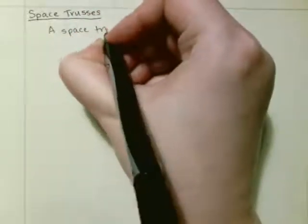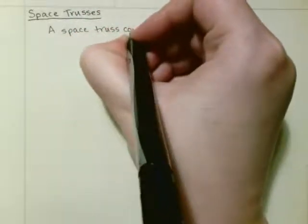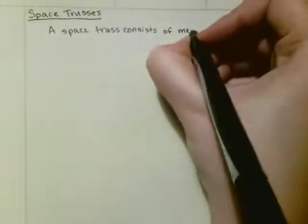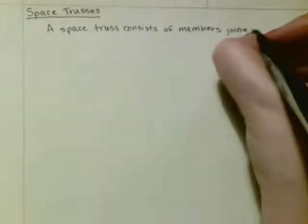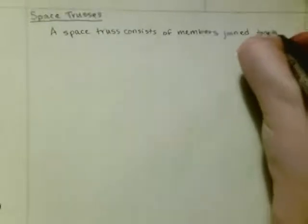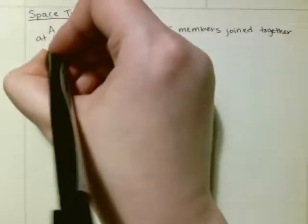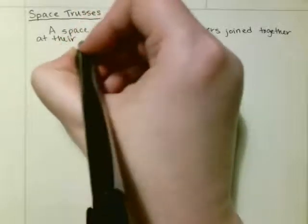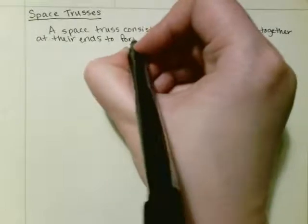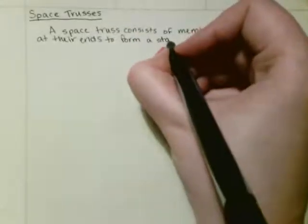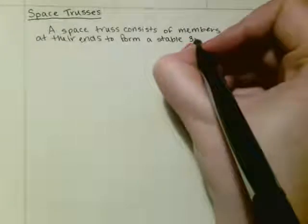Okay, this is space trusses. A space truss consists of members joined together at their ends to form a stable 3D structure.